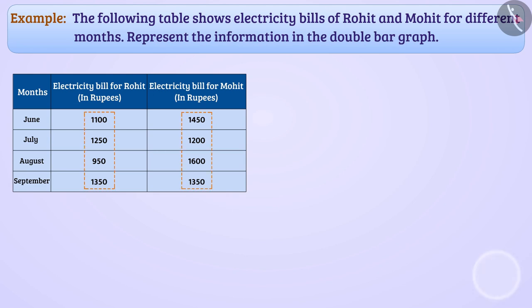Think, think. Let me tell you, the smallest number here is 950 and largest number here is 1600.